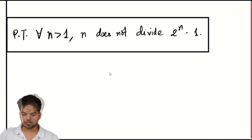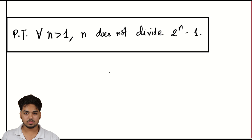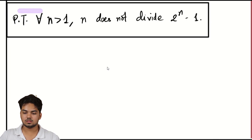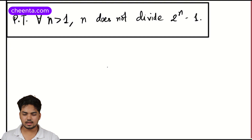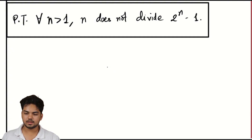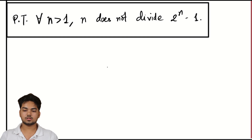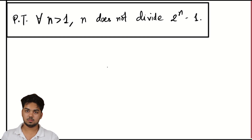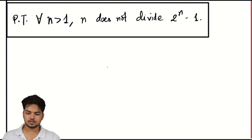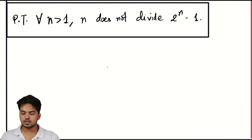Here's the problem: prove that for all n greater than 1, n does not divide 2 to the n minus 1. It's a relatively simple problem compared to the other problems on the test. Your intuition is probably right. You can check a few cases — as usual, pause the video and try the problem on your own. You'd see that of course it's true, but you also want to think about what kind of statement you're looking at.